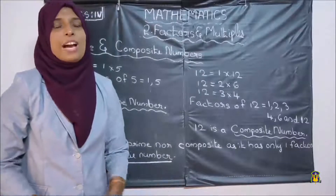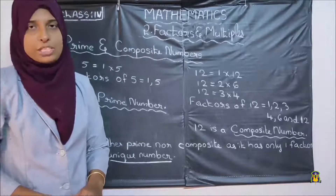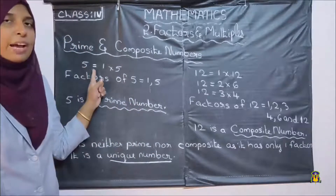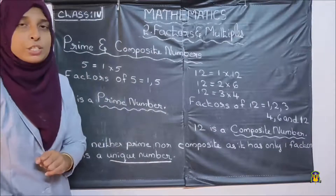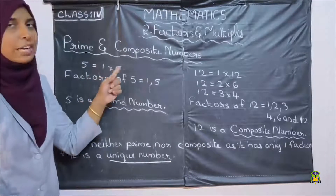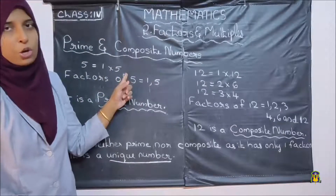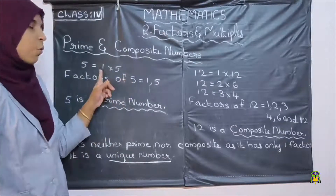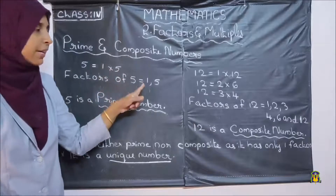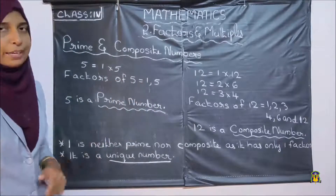Next, we are going to study what are prime and composite numbers. Look at the number 5. What are the different possible combinations of 5? We can write it as 1 into 5 — only that combination. So factors of 5 are 1 and 5, only 2 factors.